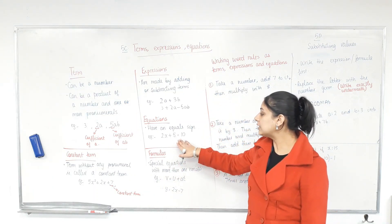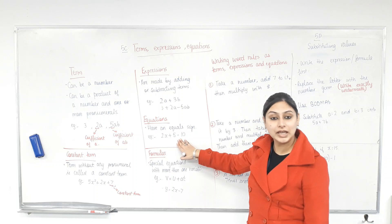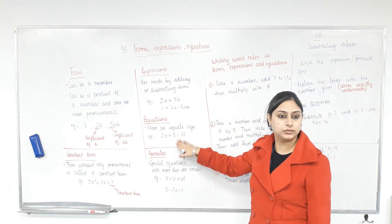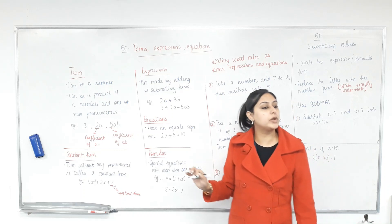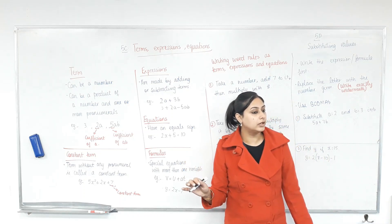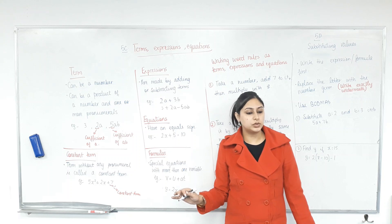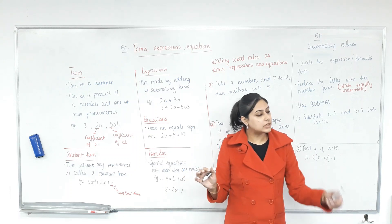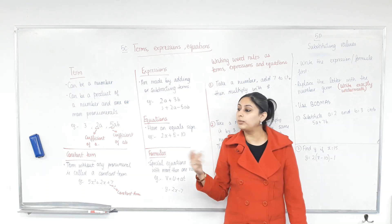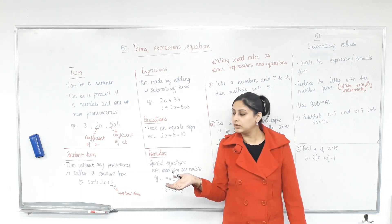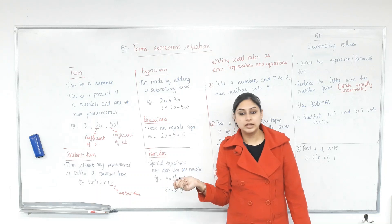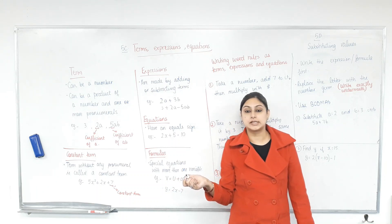When something has an equal sign, it becomes an equation. Something you must always remember: an equation must have an equal sign. Eyes on the board. What must an equation have? An equal sign. Are we clear on that? Yes.